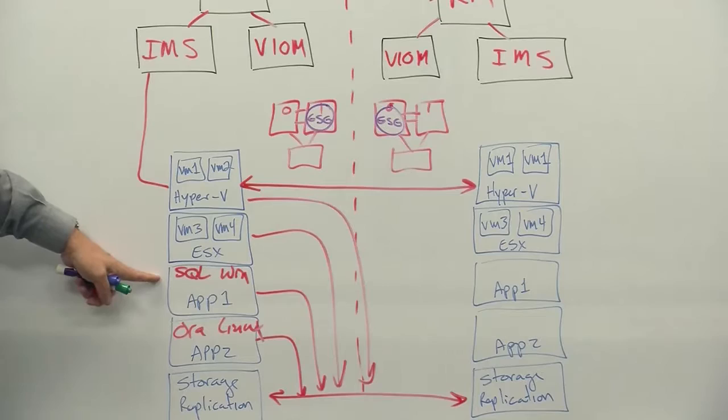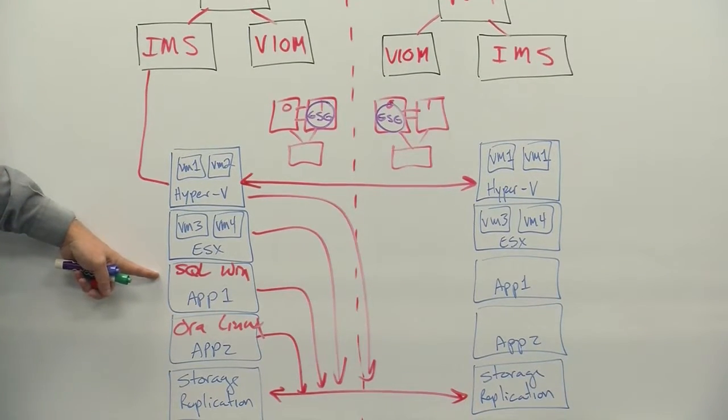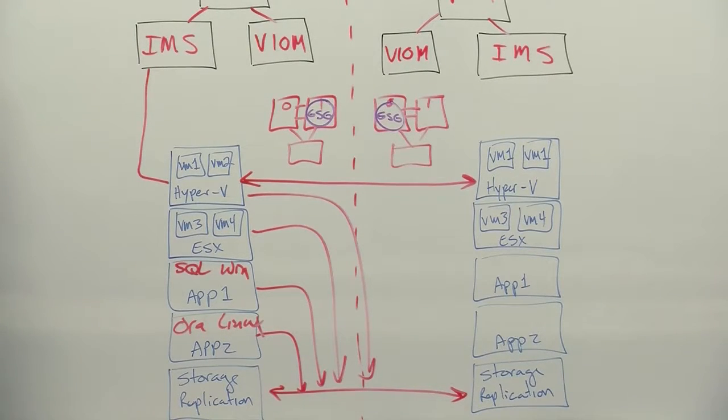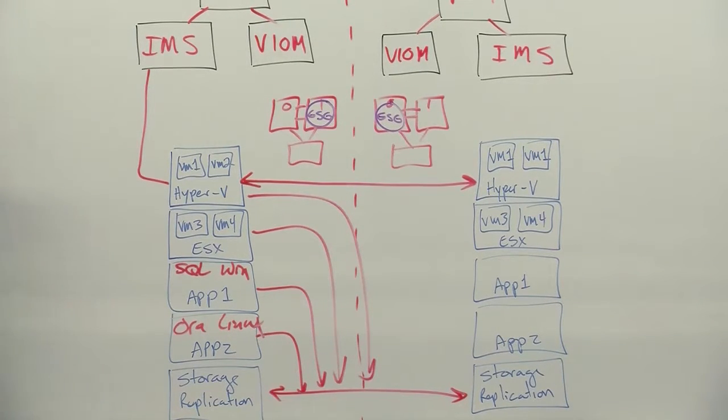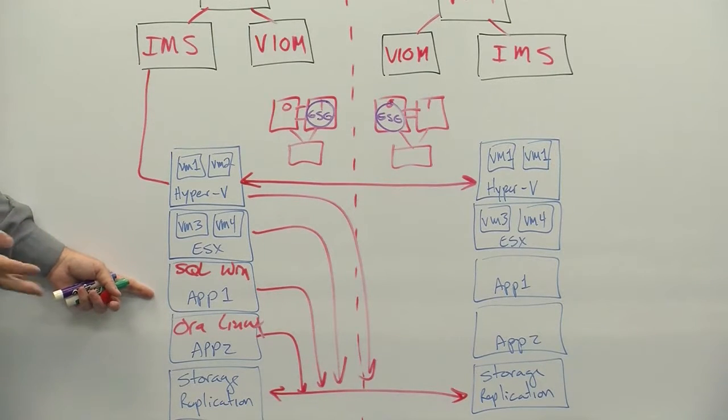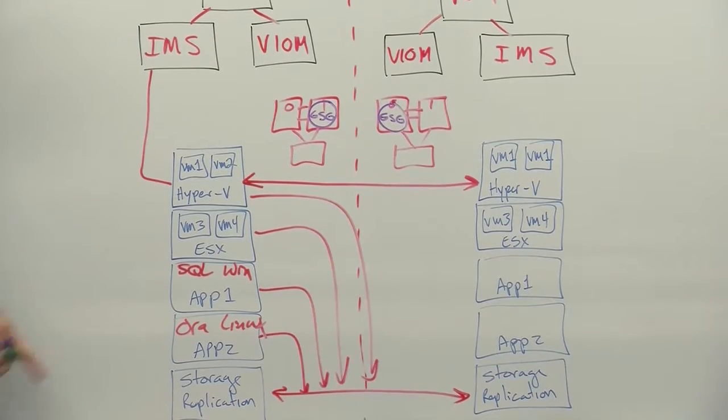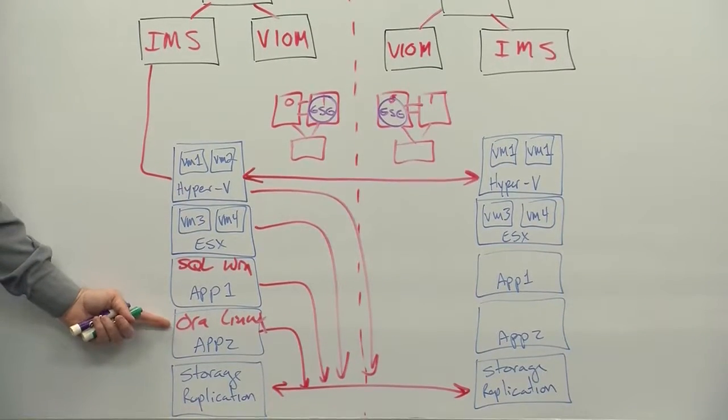We also have a mechanism that was introduced in the last version called Application SDK, Software Development Kit, a series of Perl APIs that you can use to write your own custom code for us to perform discoveries, define the application, startup parameters, shutdown parameters, logging parameters, things like that. So you're not tied to just these two types.